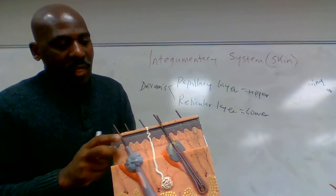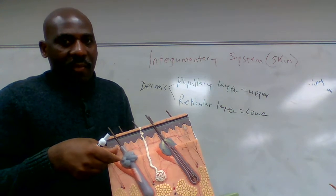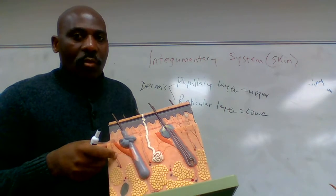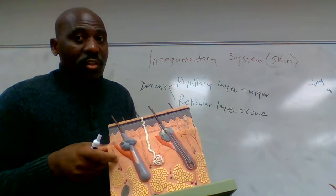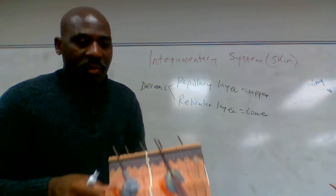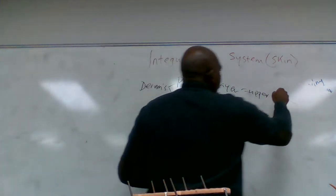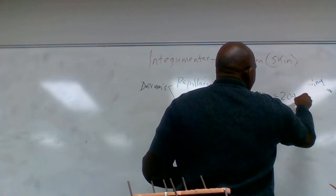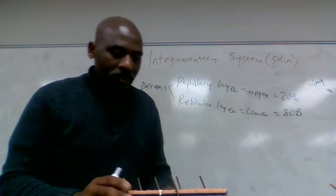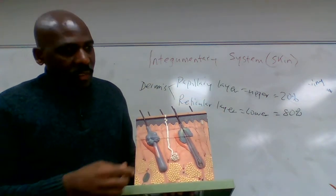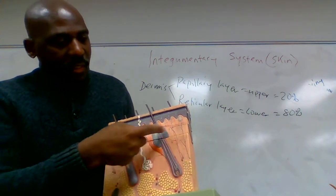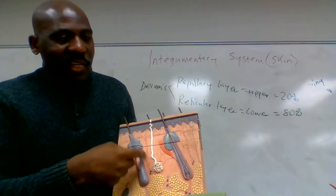If this model were made proportionately, we would see that the upper layer is smaller than the lower layer. The papillary layer constitutes roughly 20 percent of the dermis, while the reticular layer constitutes roughly 80 percent. Unlike the epidermis, the dermis is living.